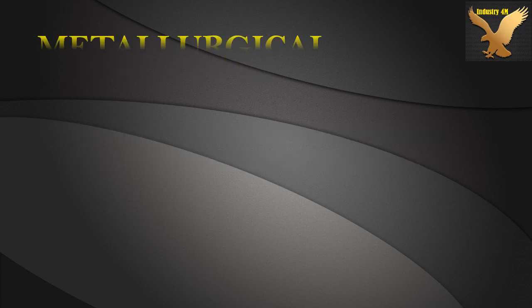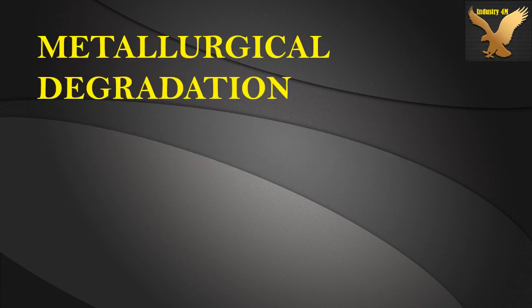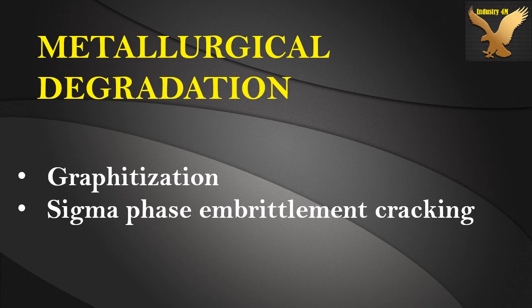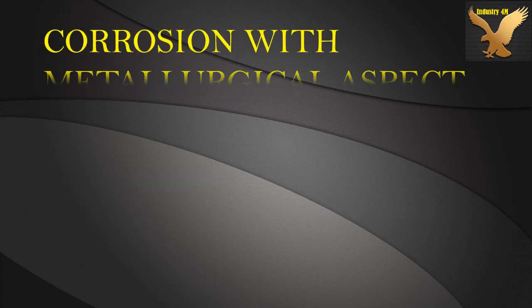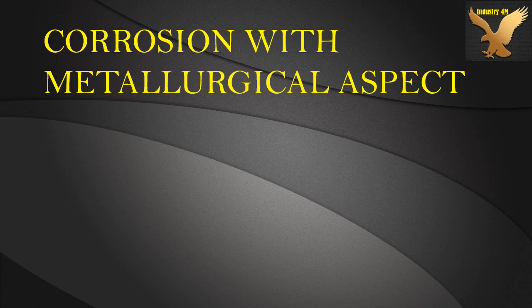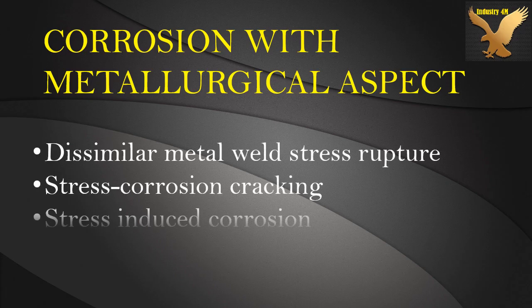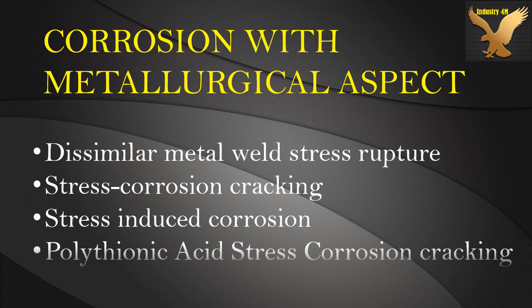Metallurgical degradation: Graphitization. Sigma phase embrittlement cracking. Corrosion with metallurgical aspect: Dissimilar metal weld stress rupture. Stress corrosion cracking. Stress induced corrosion. Polythionic acid stress corrosion cracking.